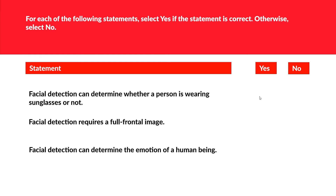The next question is related to facial detection, where you select yes or no for each statement. First: facial detection can determine whether a person is wearing sunglasses — yes, this is true. Second: facial detection requires a full frontal image — no, because when you use a smartphone it detects your face without needing a full frontal image. Third: facial detection can determine the emotion of a human being — yes, it can detect whether you are sad, happy, or angry.